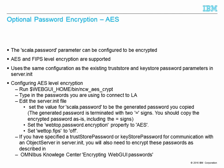Set the webtop.password.encryption property to AES and set webtop.FIPS to off. You should note that if you specify the trust store password or key store password for communication with an object server in server.init, you will also need to encrypt these passwords as described in the encrypting WebGUI password section in the Omnibus Knowledge Centre. In the server.init file you can either specify to encrypt all passwords or encrypt none — you cannot mix and match which passwords are encrypted.